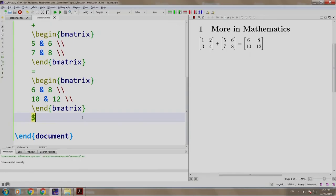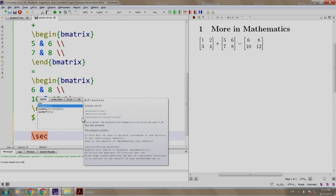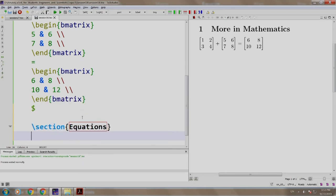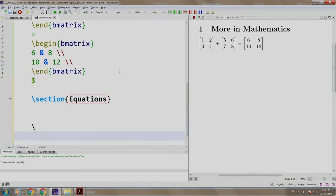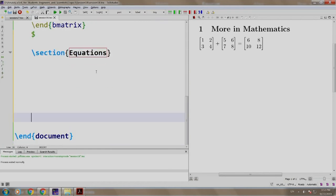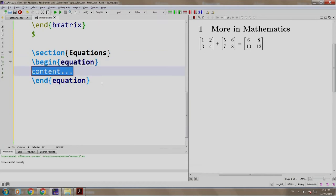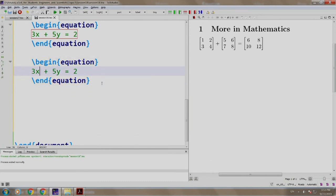We add a section called equations and we write slash begin equation and we say 3 x plus phi y equal to 2. Let us add another equation. So we just copy paste it. We align it for better readability and we say 5 x plus 8 y is equal to 3.